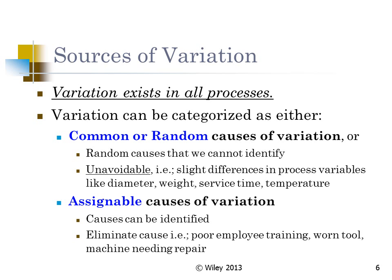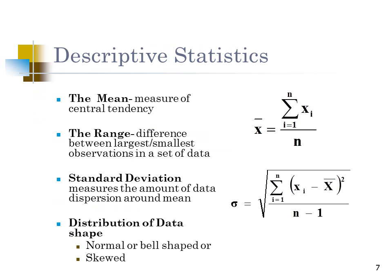The second type is assignable causes of variation. These can and must be identified — they can be assigned and related to specific causes such as poor employee training or something wrong with the machines.